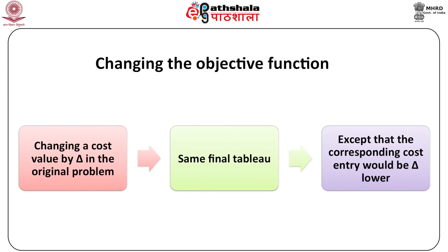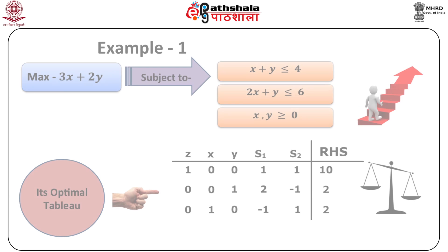Changing the objective function. The first change we will consider is changing a cost value by delta in the original problem. We are given the original problem and an optimal tableau. If we had done exactly the same calculations beginning with the modified problem, we would have had the same final tableau except that the corresponding cost entry would be delta lower. This is because we never do anything except add or subtract scalar multiples of rows 1 through m to other rows — we never add or subtract row 0 to other rows.